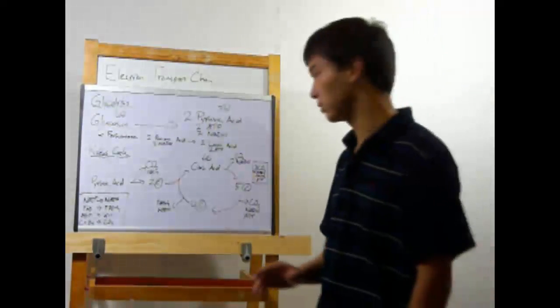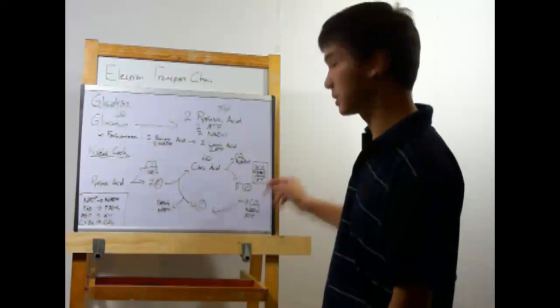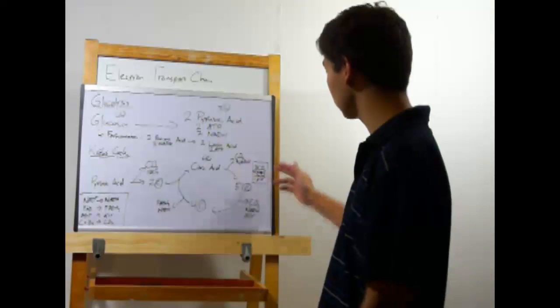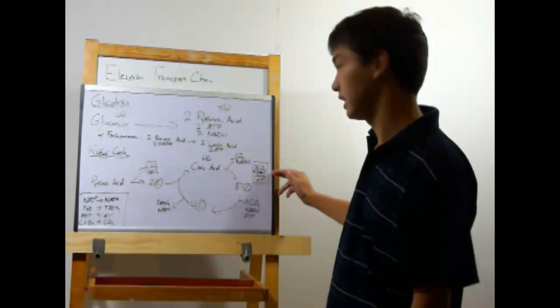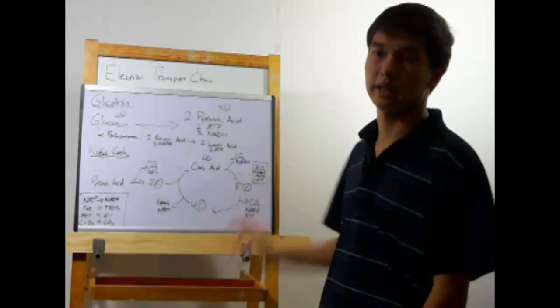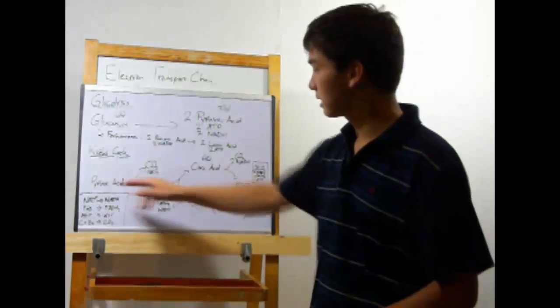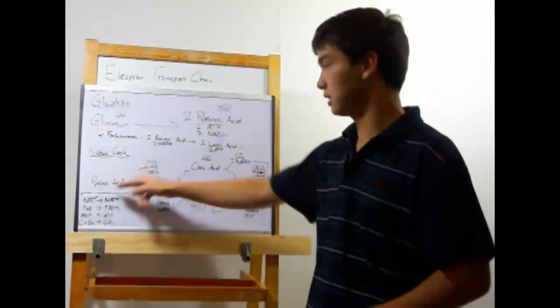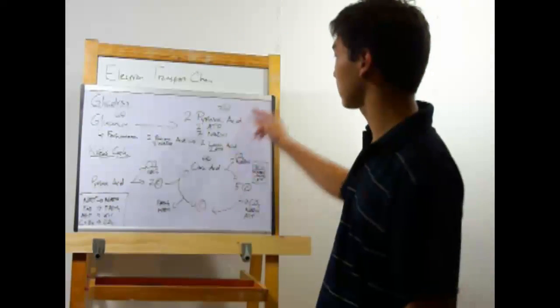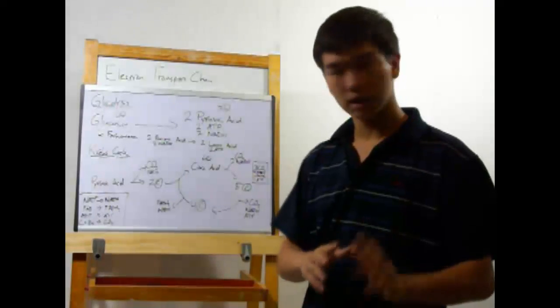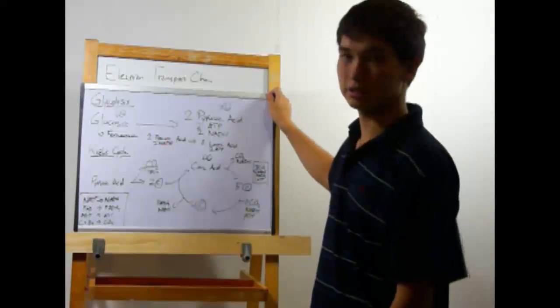Now before I move on, I'd just like to note one thing. I've written out some numbers here for what's produced during the Krebs cycle: three CO2, four NADH, one FADH2, and one ATP. These numbers should be doubled, because as you can see, this Krebs cycle run uses only one pyruvic acid, but glycolysis produces two. You'll see those numbers appear later in the electron transport chain.